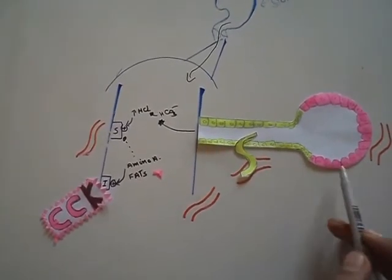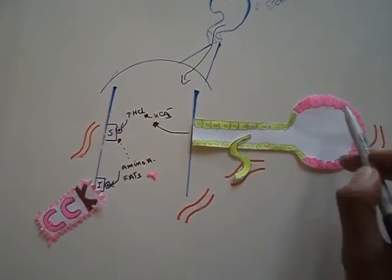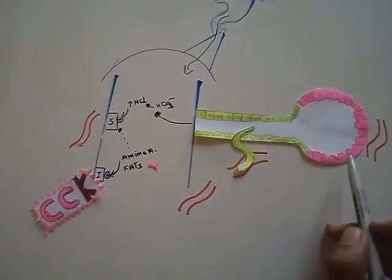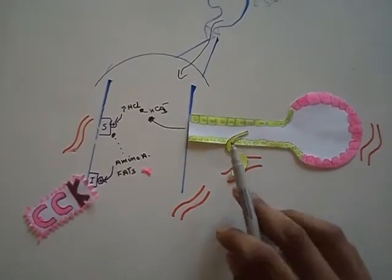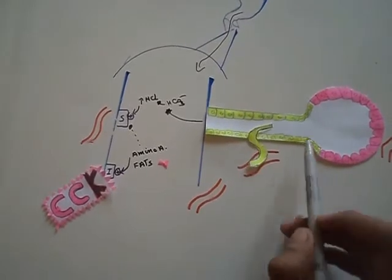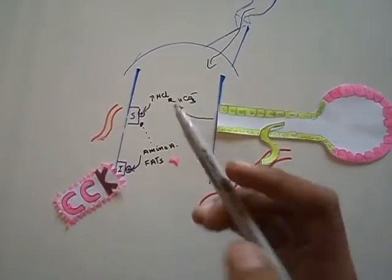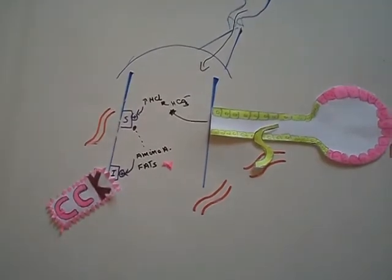This is the pancreatic duct, this is the acinus part of the pancreas, so this is the exocrine part of the pancreas. The secretin will affect the duct to produce a pancreatic juice rich in bicarbonate and with a low amount of enzymes.